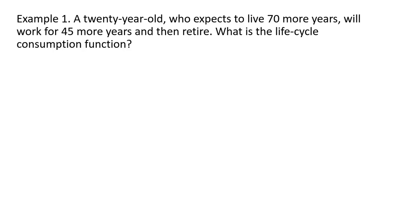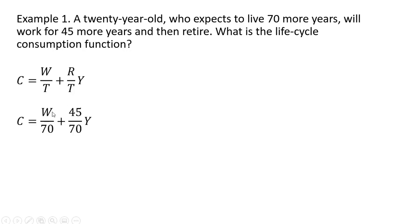Let's do an example. A 20-year-old who expects to live 70 more years will work for 45 more years and then retire. What is the life cycle consumption function? Plugging in our values: T is 70 and R is 45, and simplifying we have the following.